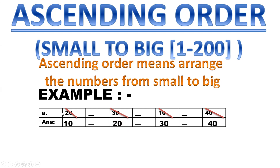Always look at the first digit. This is 2, this is 3, this is 1, and this is 4. The smallest is 1 — starting with 1, so it is 10. Then goes to 20, then goes to 30, then goes to 40.